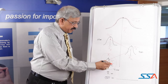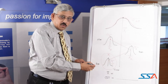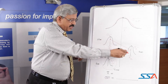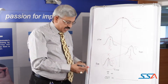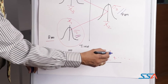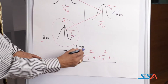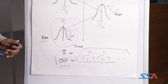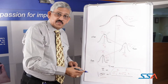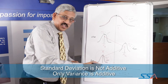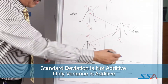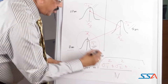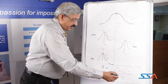With respect to the standard deviations seen in the subgroups taken at 8 o'clock (sigma 1), 9 o'clock (sigma 2), and 10 o'clock (sigma 3), if we find the average of all these standard deviations — that is, the square root of (sigma 1 squared plus sigma 2 squared plus sigma 3 squared, and so on) — we get what is called the short-term standard deviation. In the denominator we have the total number of subgroups N.